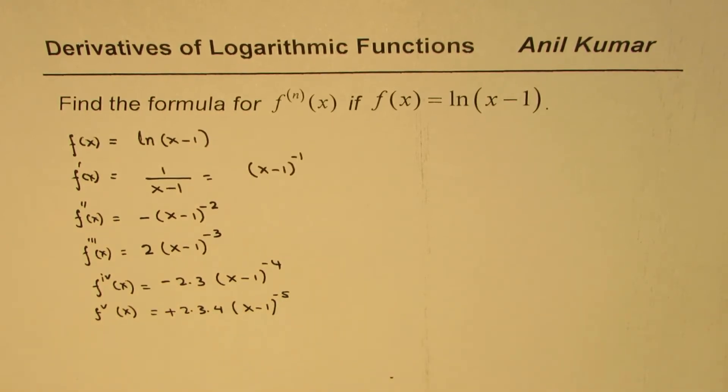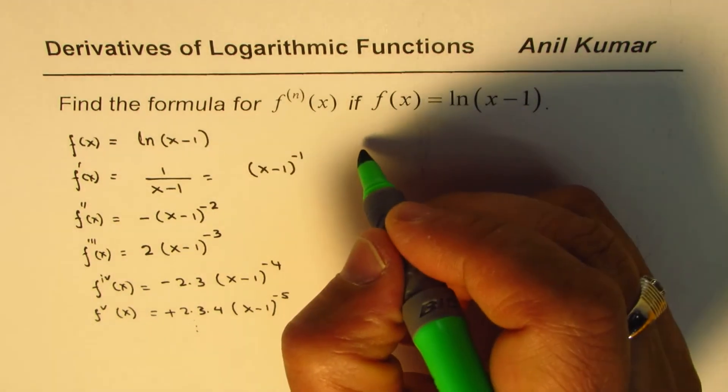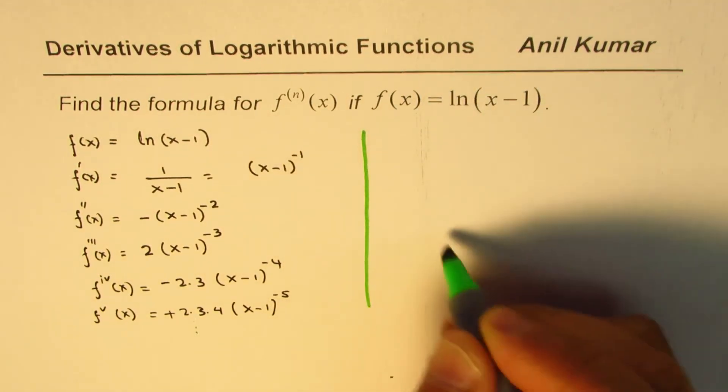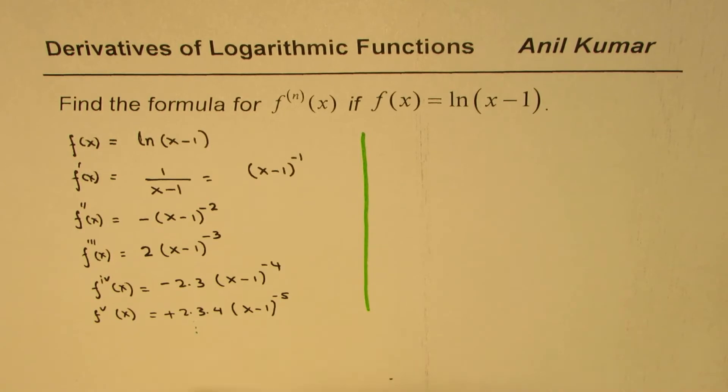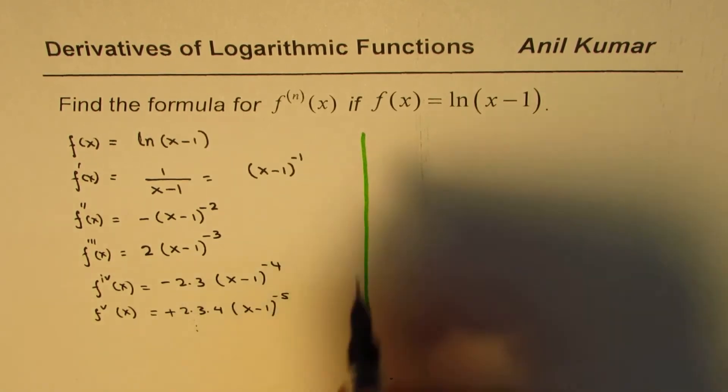So we have a trend here. Based on this, you can definitely write down the general solution. You can just continue with this trend and write a general solution. So what do you see here? The trend is that this power is negative.